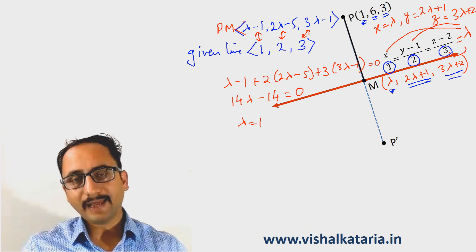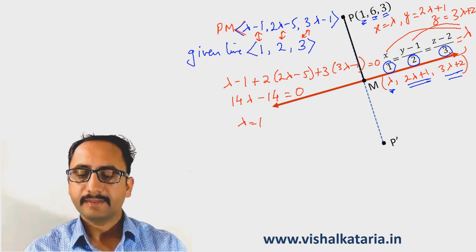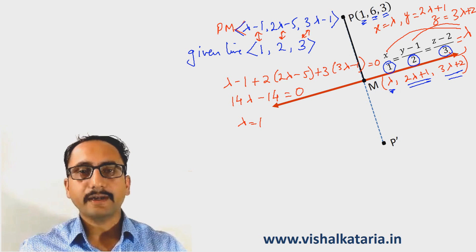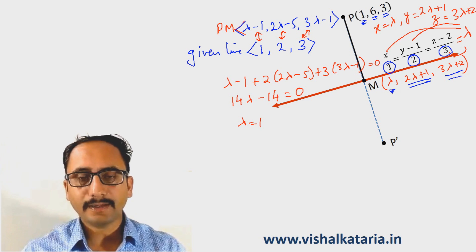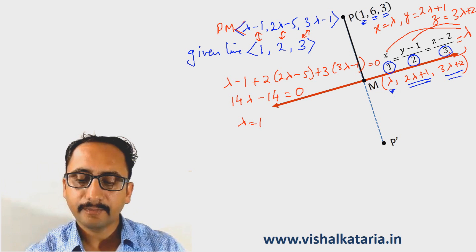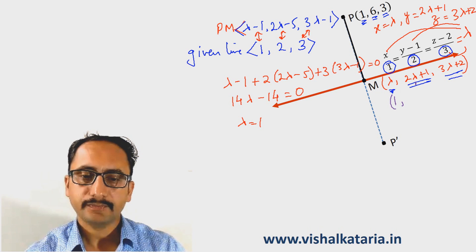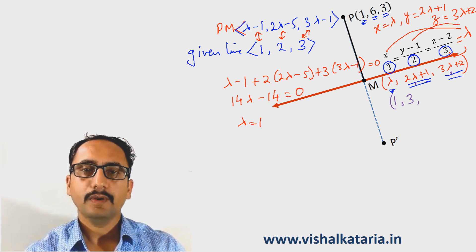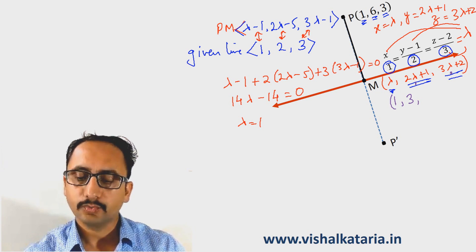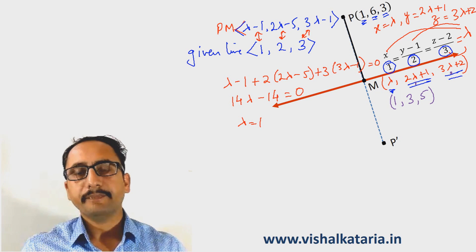Now that I have calculated the value of lambda, I know the coordinates of point M as well. If I put lambda equals 1 in the coordinates of M, I get 1 comma 3 comma 5. So these are the coordinates of point M.